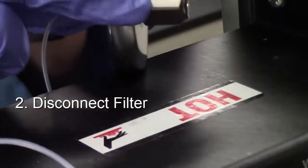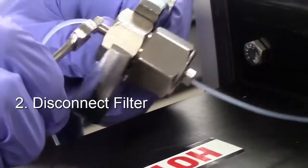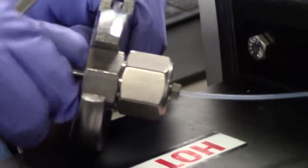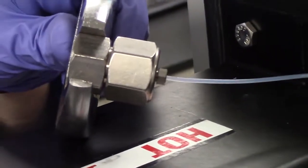Step 2. Disconnect the filter. Using a quarter-inch wrench, unhook both the inlet and outlet lines to the filter housing unit. Remember that the flows should already be off, so there should be no solvent leaks.